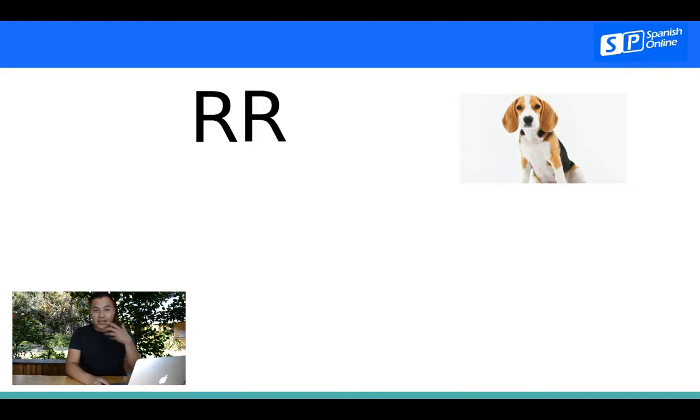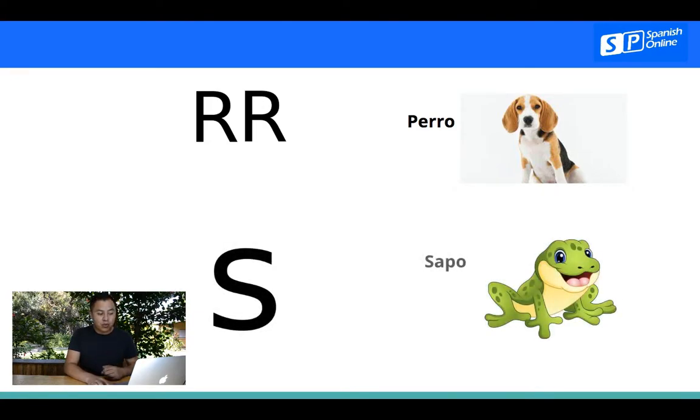And that's just with one R, but a perro, for example, is with two R's. So, the pronunciation is a little bit different, and it's important to know that. For example, caro is expensive, and carro, it's a car. So, it's important to know that.